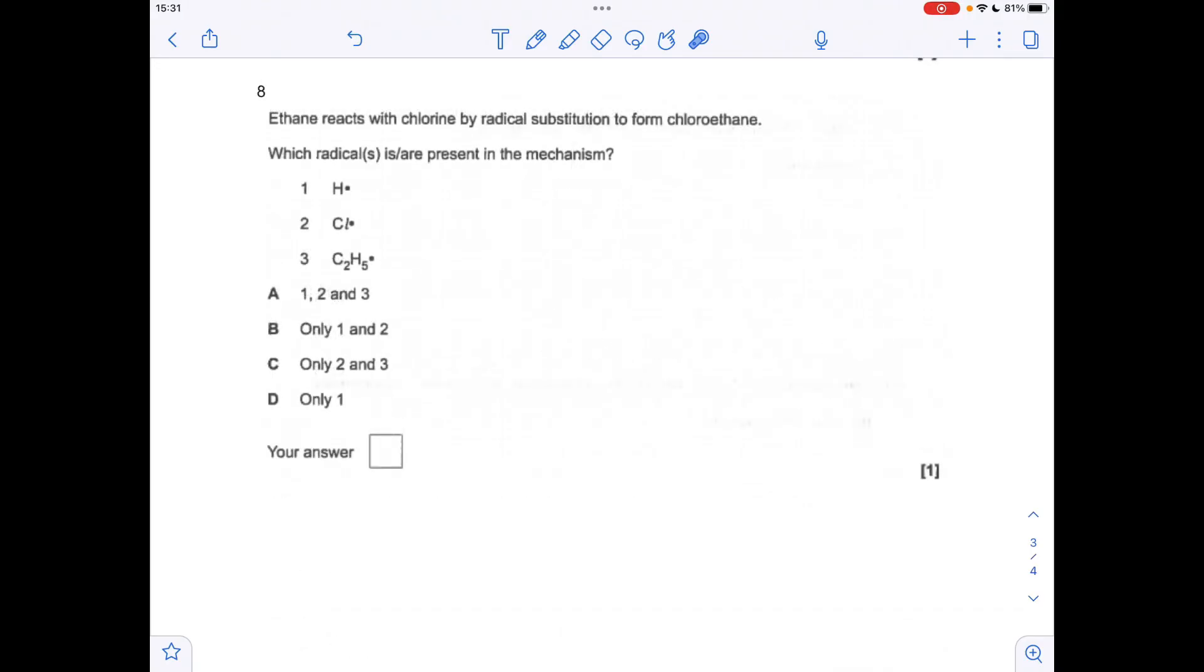And finally for question eight, why don't we have a quick look at the mechanism for the reaction of ethane with chlorine to make chloroethane. So the initiation step, you take your chlorine molecule, apply UV, and you get your two chlorine radicals.